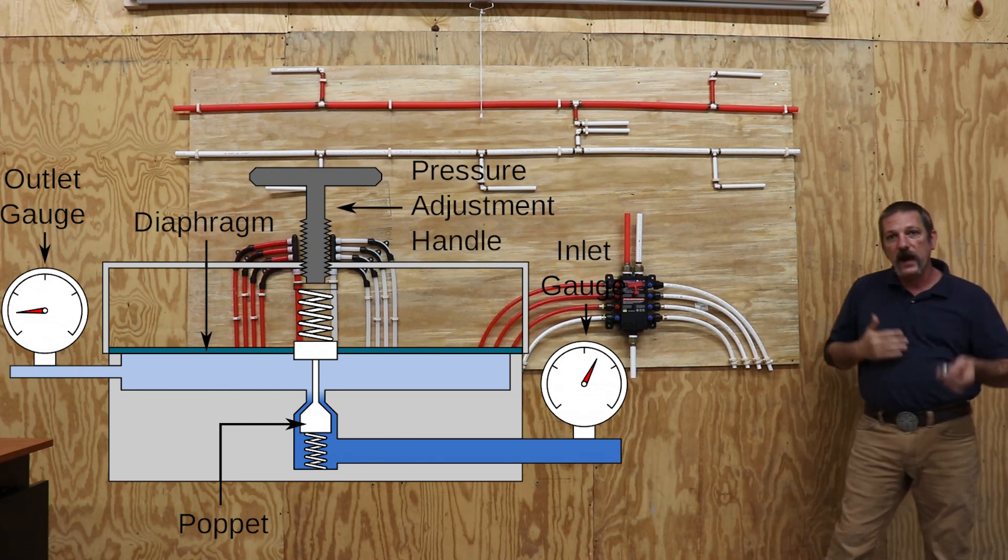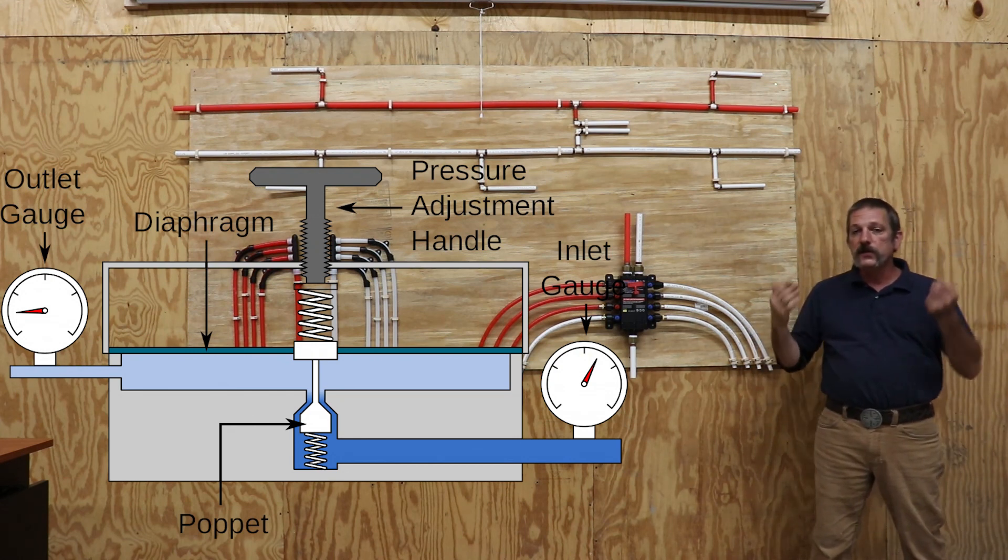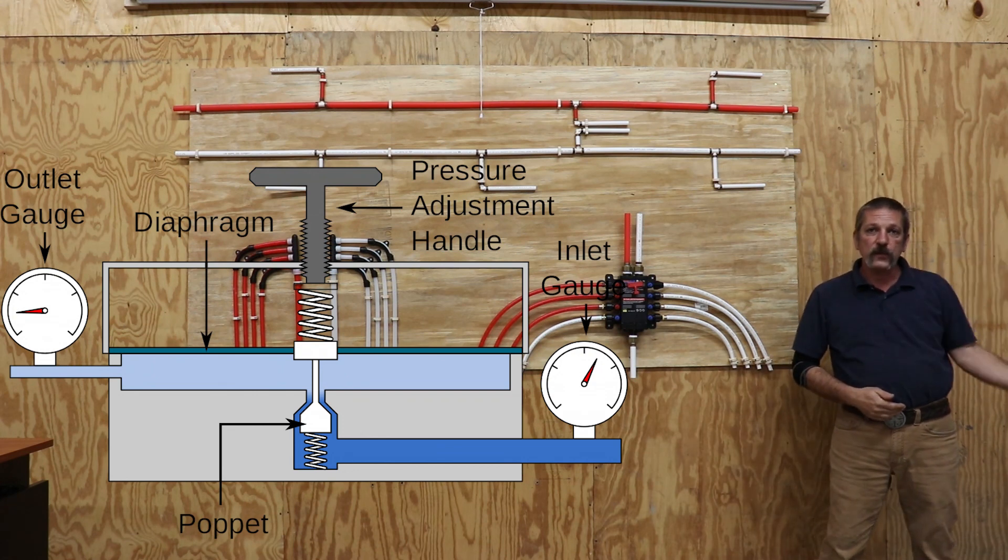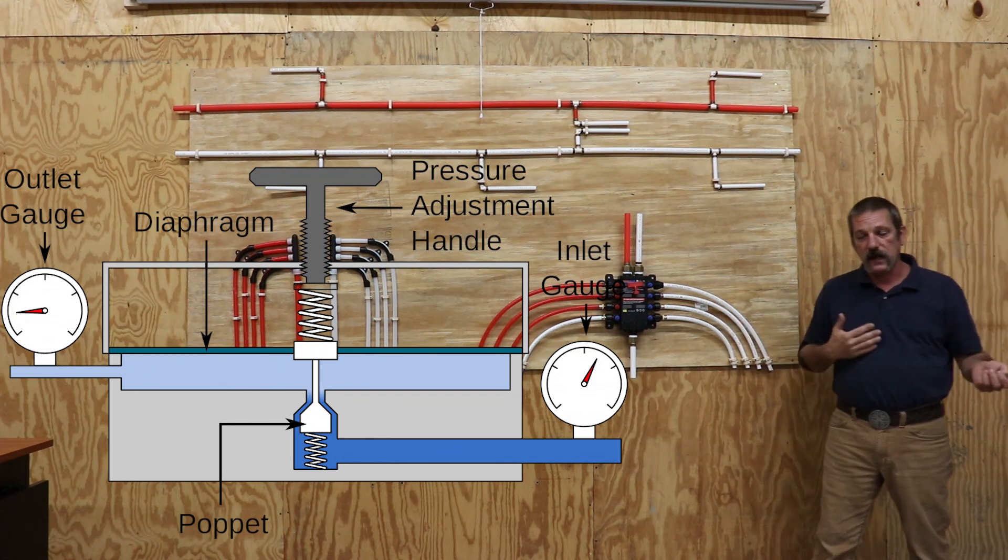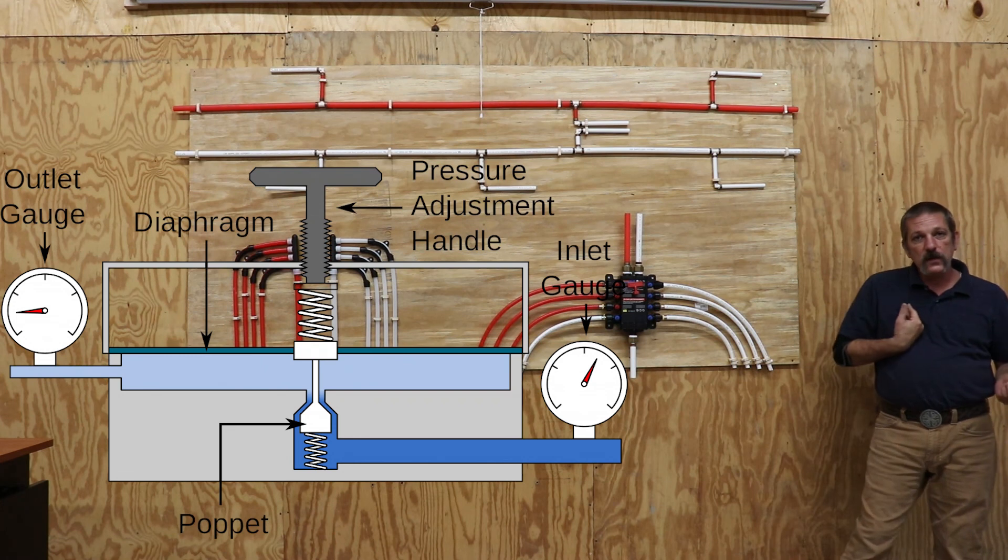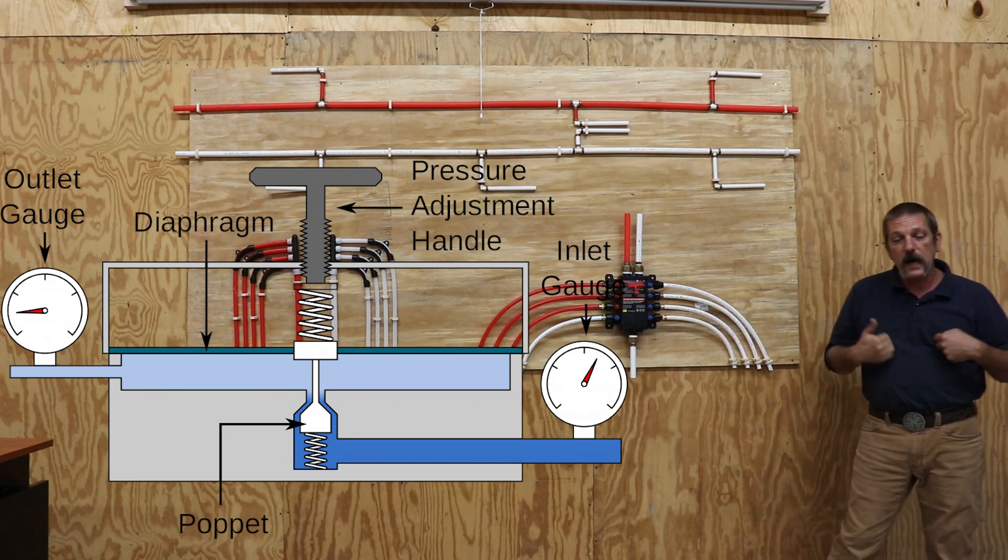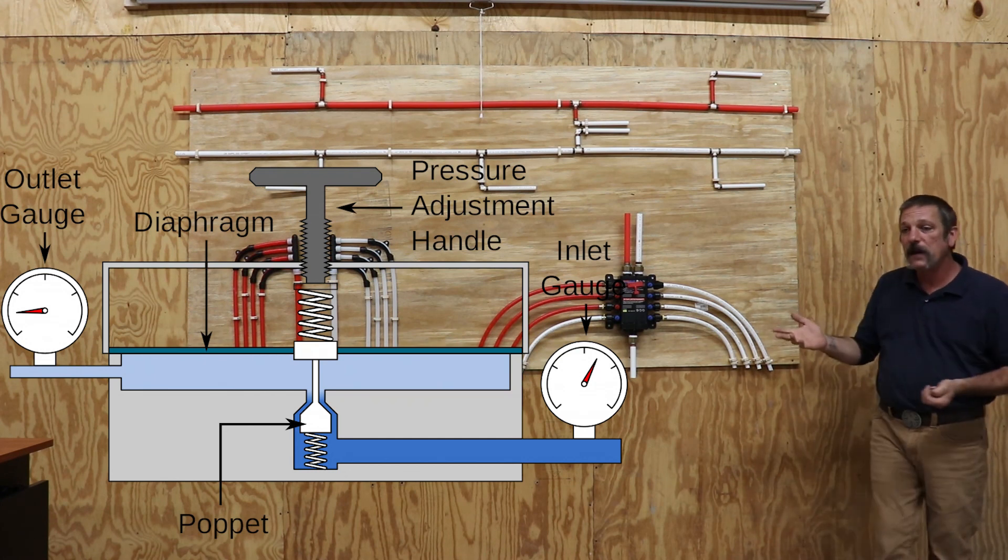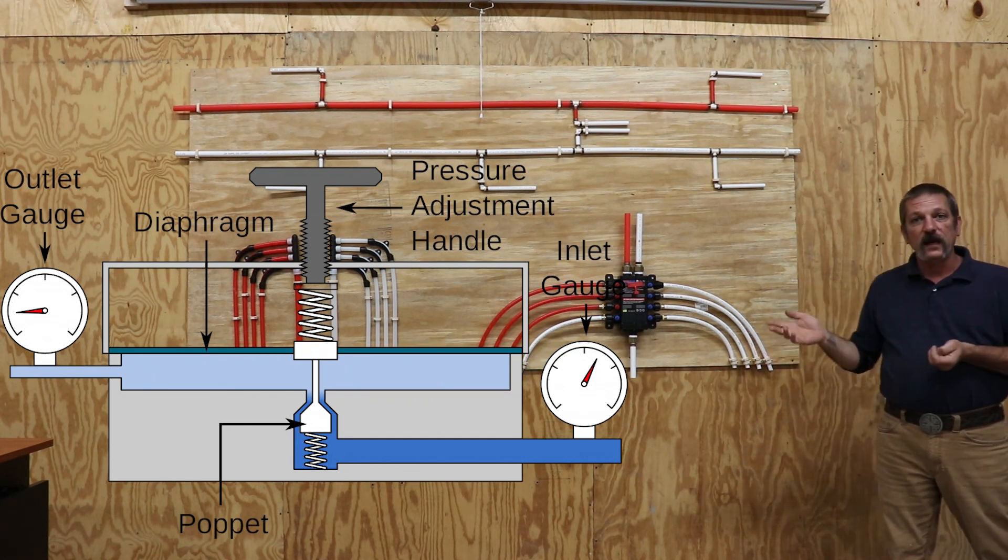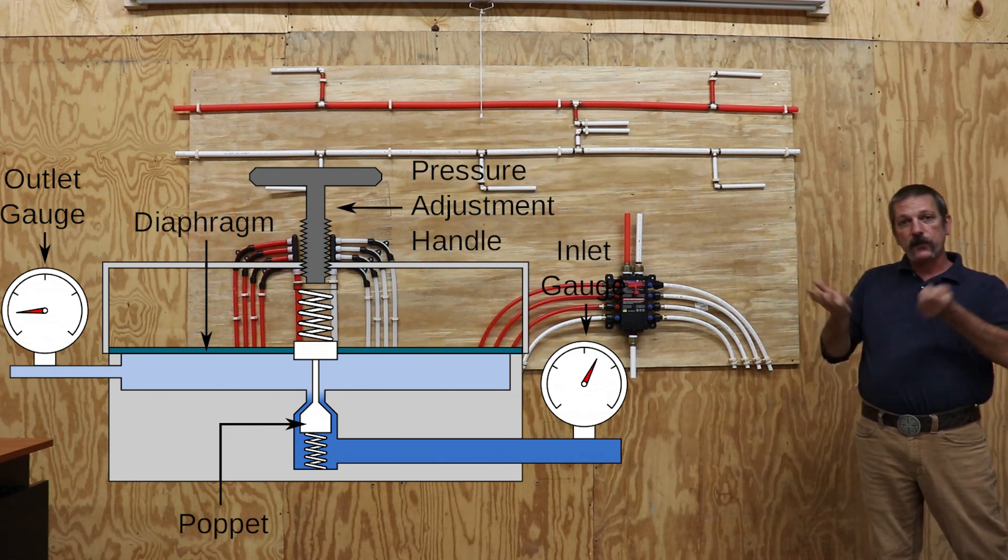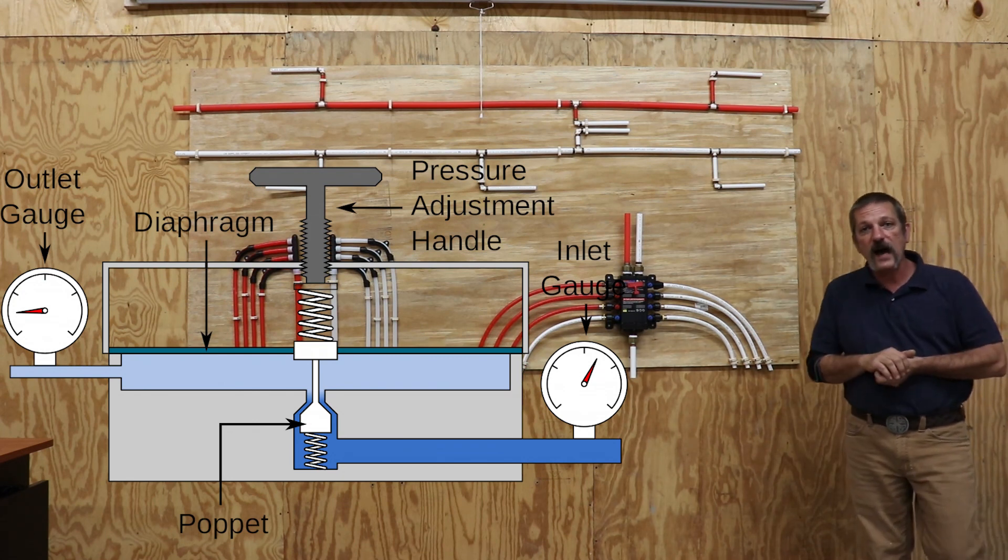Which is how it regulates the pressure. It's using the downward force of that spring and the water pressure to equalize itself. Now the ones we use work on the outgoing pressure. There are some that work on the incoming pressure. But it's the same basic thing. You've got the pressure from the spring and the pressure from the water pushing on that diaphragm. And when they balance out that poppet will close and that's how it works.